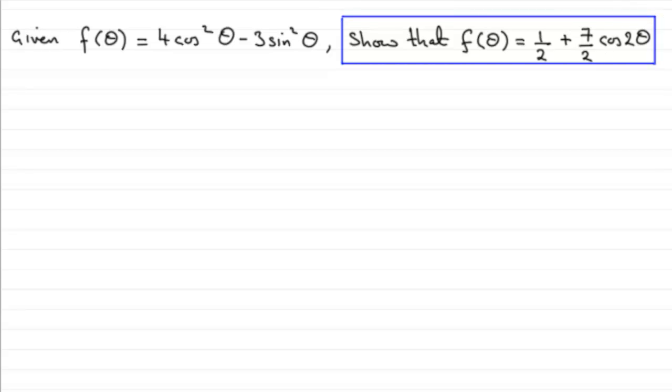To do a question like this, what I notice is that we've got to get our value of f of theta in terms of cos 2 theta. And all we've got is theta, angles in terms of theta. So we should be familiar with an identity based around double angle formula for cos of 2 theta.